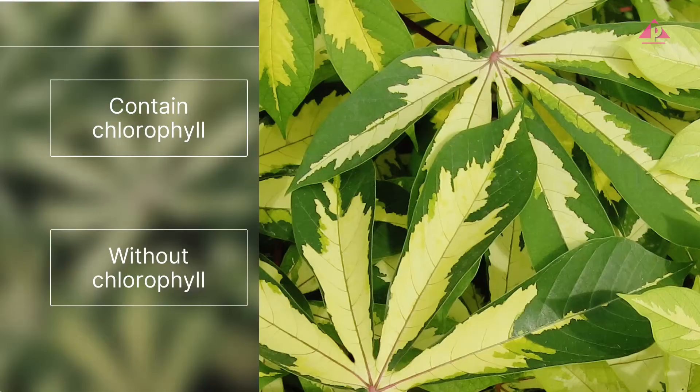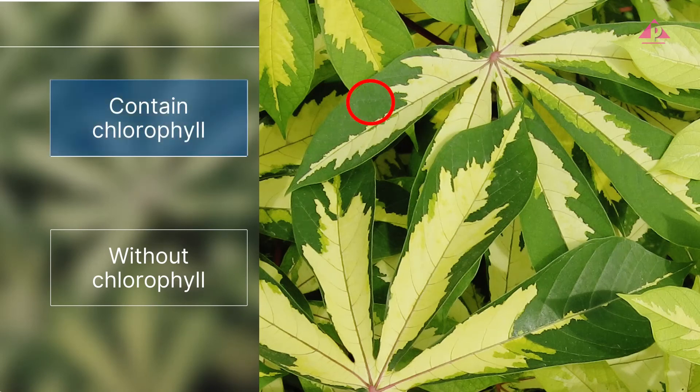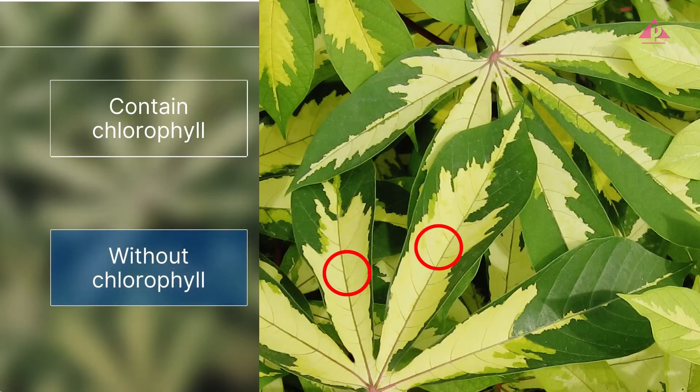Note the features of variegated leaves before answering the question. The green parts of the leaf contain chlorophyll, while the non-green parts do not.